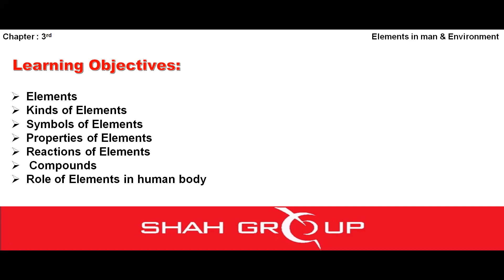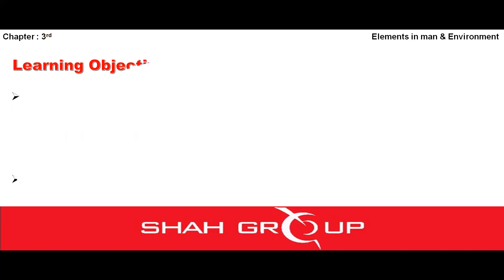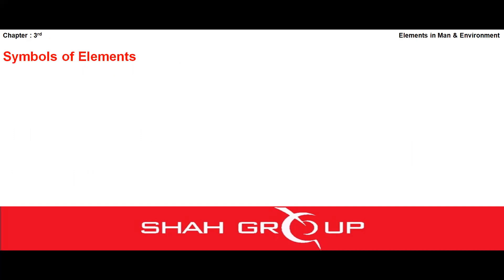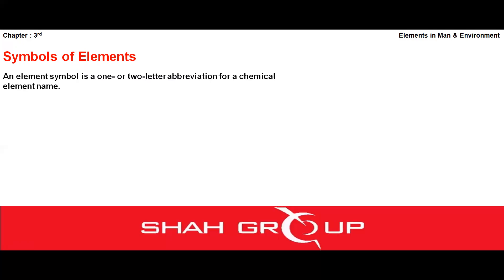Aaj hum dekhte hain ki aaj aapko kya padhaoongi. Aaj main aapko is chapter se padhaoongi Symbols of Elements ka topic. Hum is topic mein yeh padhenge ki humne elements ko symbols kyun diye, aur humein kyun zaroorat pesh aayi ki 118 elements jo ab tak discover ho chuki hain unko symbols se identify karein. Aur is topic mein hum yeh bhi padhenge ki kaunse element ko kaunsa symbol allot kiya gaya hai.